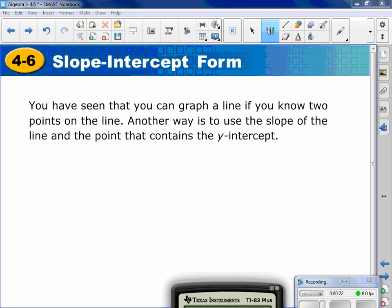We have been graphing with two points on a line, just taking one point, taking another point, drawing a line through them to get a line. Now what we're going to learn about is graphing using the slope-intercept form.